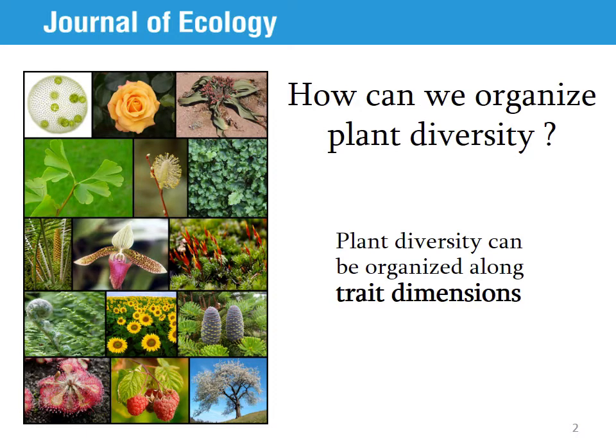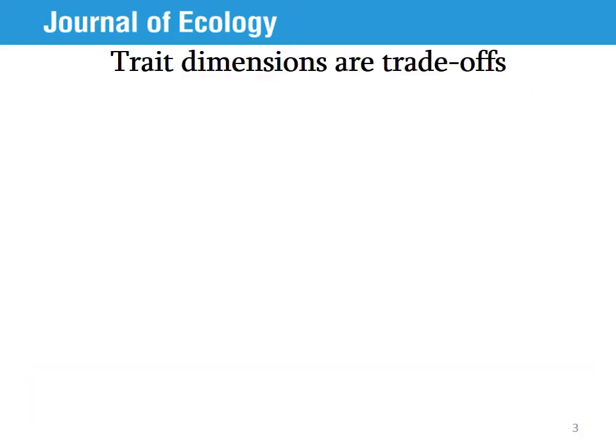The diversity of plant life is phenomenal, and one of the pursuits of ecology is to organize and make sense of that diversity. One way to classify this diversity is to describe main dimensions of phenotypic variation. These trait dimensions reflect different strategies that plants have evolved to be successful in different environments. Trait dimensions are sets of correlated traits reflecting trade-offs among vital physiological functions.